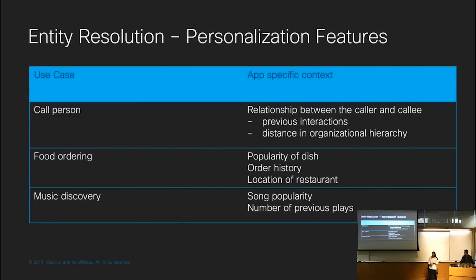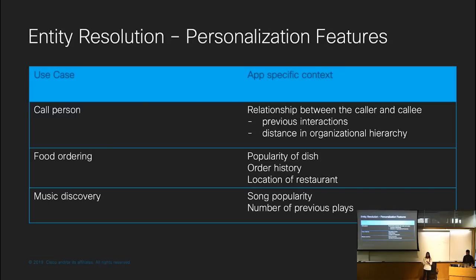The third broad category of features is personalization. This varies by use case but is very important for achieving high accuracy. For the call person use case, we can take into account the context of who is calling and who is the callee — things like the relationship between the caller and callee based on previous interaction history, how close they are in the organizational hierarchy, whether they're on the same team or org. Similarly, for a food ordering use case, you could consider a person's order history, the popularity of a dish, or how close they are to the restaurant they're ordering from.